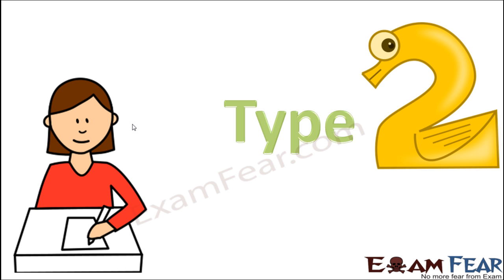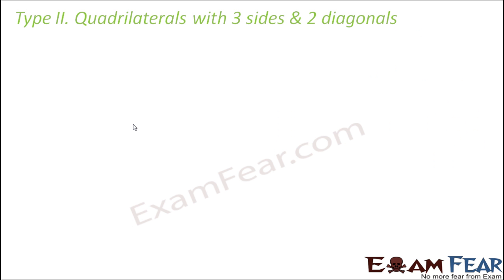So let us now look at type 2, that is another type where we would construct a quadrilateral but this time not all the sides would be given, something else will be given. So here the quadrilateral with 3 sides and 2 diagonals, so instead of one diagonal now we will know both the diagonals but this time we will not know all the 4 sides, we will just know 3 sides. So let us see in this case how do we go about it.